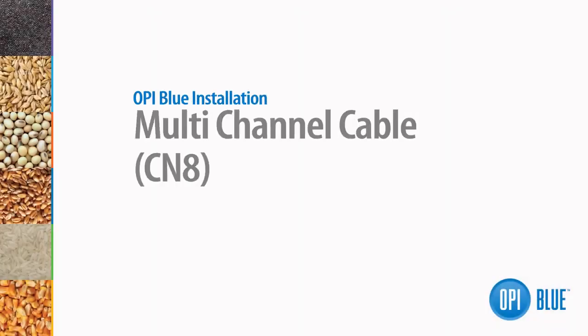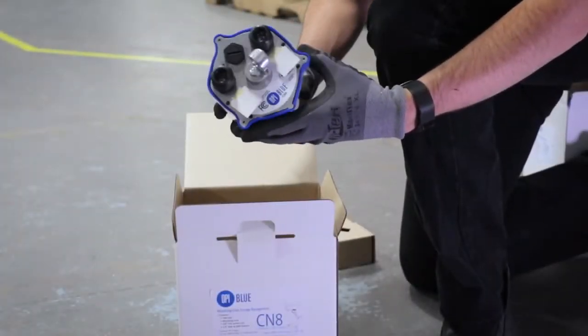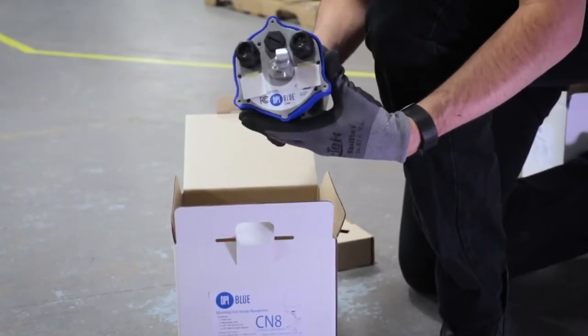You're now ready to install your cable node. On the bottom of all cable nodes, there are two tab stickers that contain the MAC address and PIN number for each of these units.